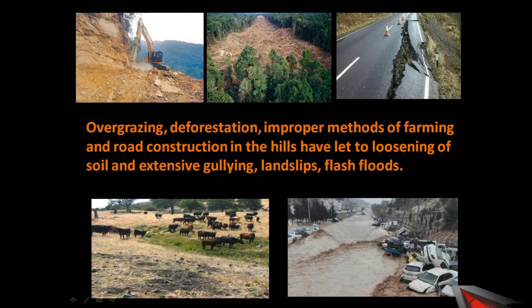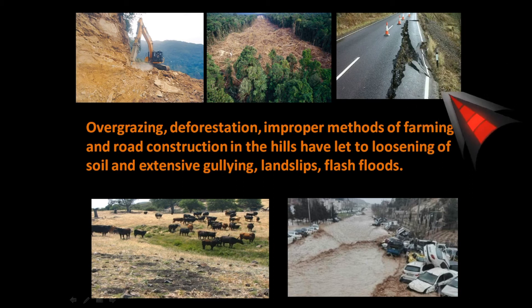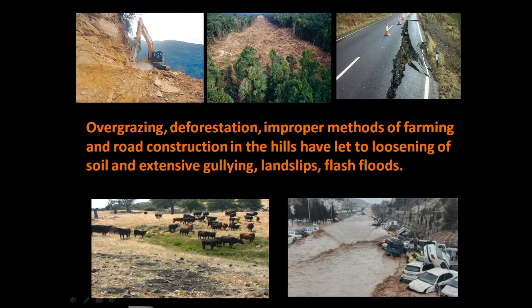As seen in the picture, flash floods can move vehicles and cause significant destruction. Loosening of land and landslips in hilly regions cause roads to break down. Overgrazing, where large numbers of animals are present, is another major problem. Poor management of agricultural land and forests in the northeastern hill states results in landslides, floods, and sheet erosion.